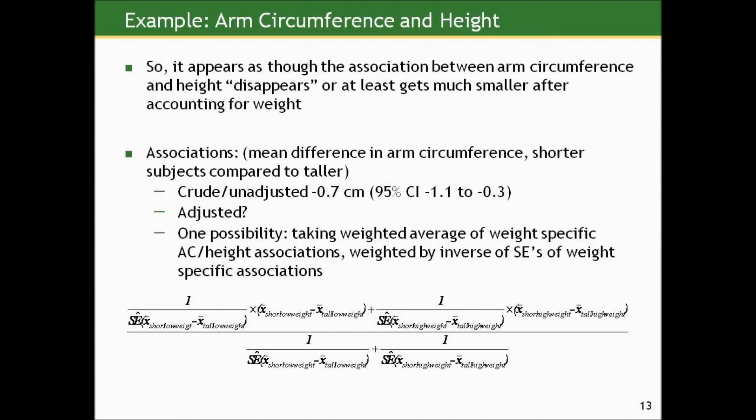It appears the association between arm circumference and height pretty much disappears after we account for weight. We could show those numbers and present the evidence of confounding. You might say, wouldn't it be nice to present one overall weight-adjusted association? The crude unadjusted association was a mean difference — shorter to taller — in arm circumference of negative 0.7 centimeters. How could we calculate the adjusted association?